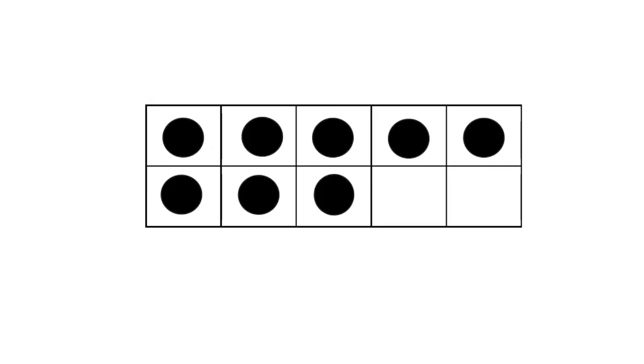When asked how many counters there are, kids will first count one at a time: 1, 2, 3, 4, 5, 6, 7, 8.